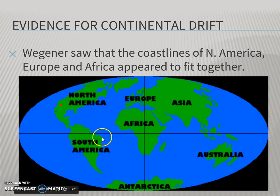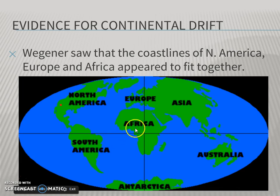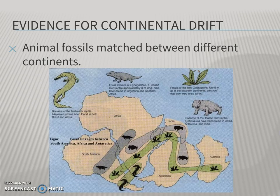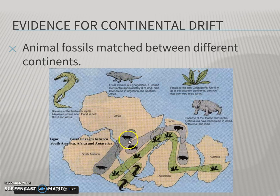If the continents were really as far apart in the past as they are today, it would have been very difficult for land-dwelling animals to swim 2,500 miles or more to get across, or nearly 5,000 miles to reach Australia or North America. These land-dwelling and freshwater creatures and plant species survived when land masses were much closer together, so there wasn't as far to travel.